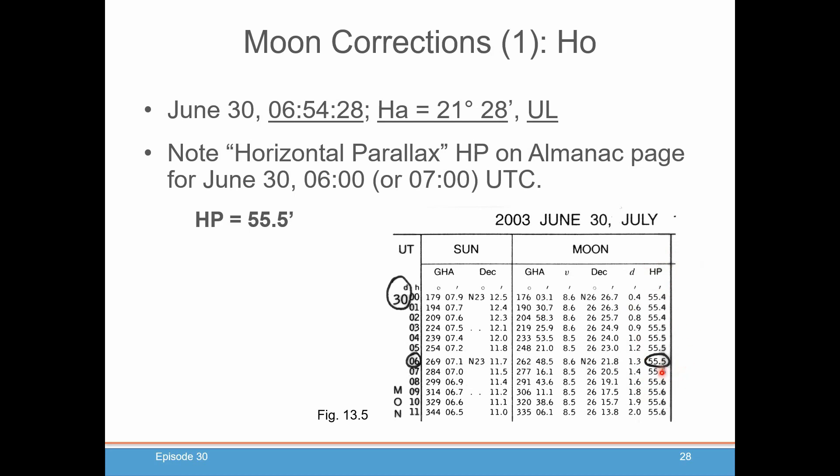The planets are usually just a couple of tenths of a minute correction. But here, we can have a fairly large correction. So they gave it a special name, horizontal parallax. And if you look in Dominic's textbook, he gets into much more detail as to actually where this comes from, why it's called horizontal parallax, etc. But for our purposes, just know that this is the number you need to calculate your HO. So we pull that out. HP is 55.5 minutes.